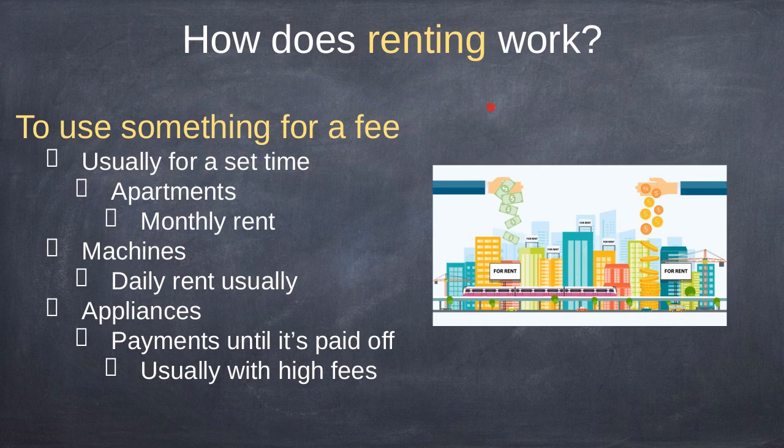So how does renting work? Renting is to use something for a fee, and when you hear rent you usually think of apartments — but you can also think of renting machines or renting a car. It's not just apartments. You use something for a fee, usually for a set amount of time. Apartments: you pay monthly rent. Machines: I paid a daily rent and used the machine for a day. Sometimes you can rent an appliance at stores and pay it off in payments, but rent-to-own usually comes with high fees.